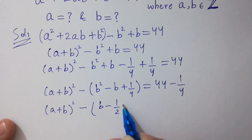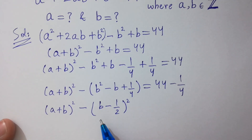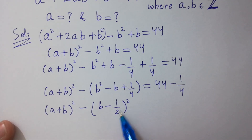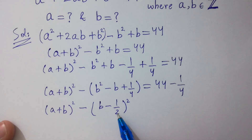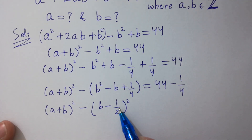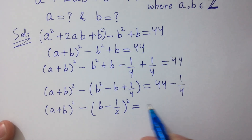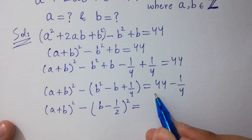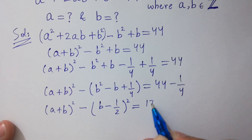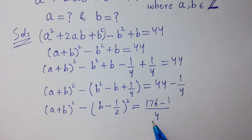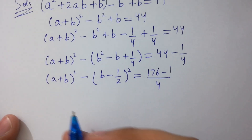because b² - 2b·(1/2), the 2s cancel, so we get minus b and (1/2)² gives 1/4 here. Got it? Multiplying both sides by 4: 4 × 44 = 176 minus 1/4, giving 176 minus 1 over 4.